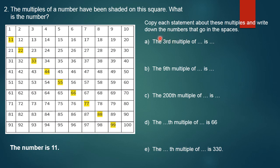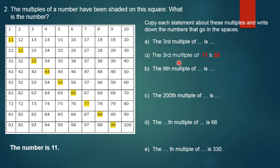Next: copy each statement about these multiples and write down the numbers that go in the spaces. Option A: the third multiple of ___ is ___. The number is 11. The third multiple of 11 — counting first, second, third — is 33. You can check from the square: the third multiple of 11 is 33.